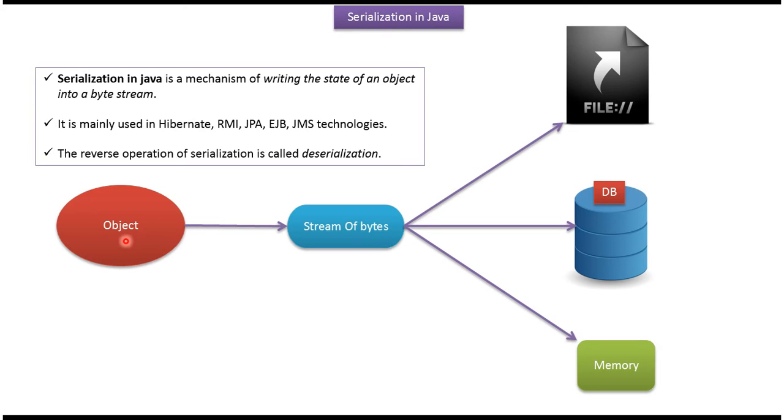Using serialization, we can convert an object into a stream of bytes, and that stream of bytes we can save in a file, DB, or memory.